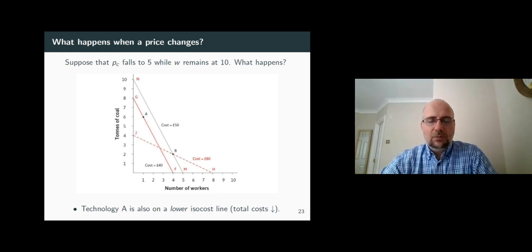Technology B requires that we employ four workers and two tons of coal. So, under the new prices, this will cost you 40 plus 10, which is 50. So, technology B costs you 50, and technology A costs you 40 under the new prices. So, which one do you choose? Of course, you will choose technology A.